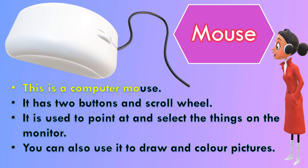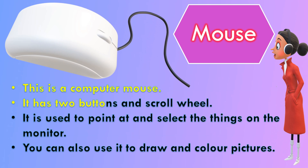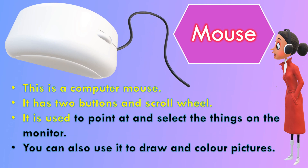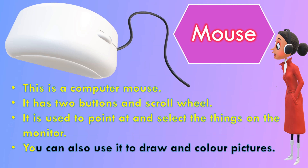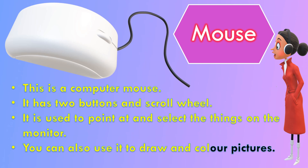This is a computer mouse. It has two buttons and a scroll wheel. It is used to point at and select things on the monitor. You can also use it to draw and color pictures.